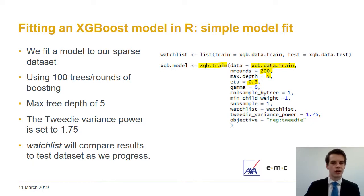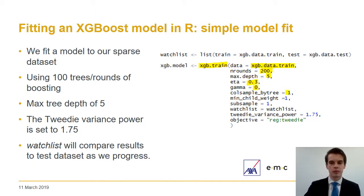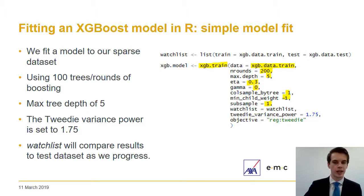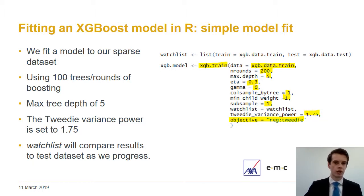Gamma is added to prevent overfitting; zero is the default value so we aren't taking any special approaches there. Col_sample_by_tree and sub_sample determine how much data is randomly selected at different stages. Min_child_weight determines how much of a difference XGBoost must see between two splits to consider a split worthwhile. Since we are modelling a Tweedie, we've set the objective to Tweedie and chosen a Tweedie variance power of 1.75, determined through a trial-and-error process before modelling.